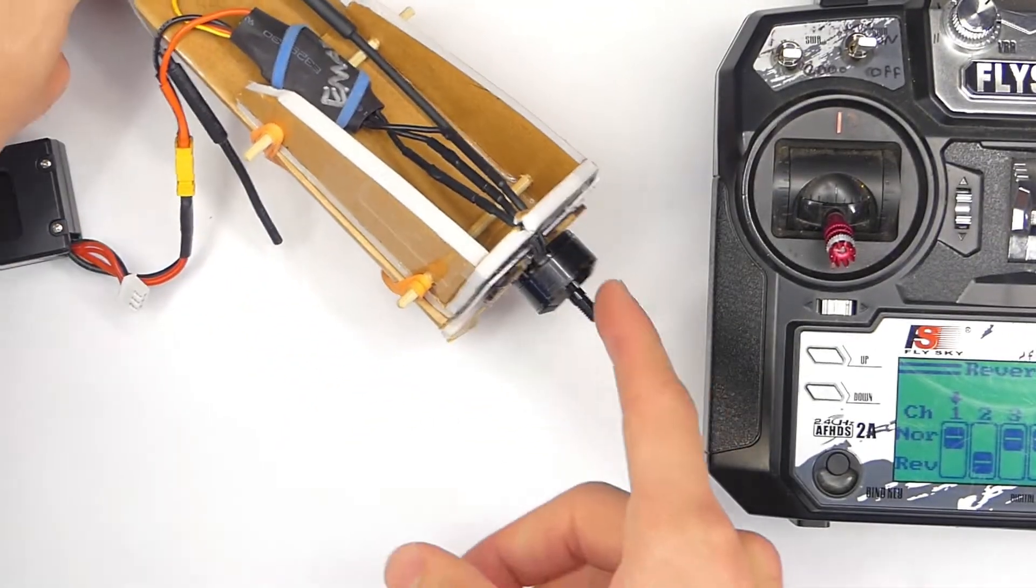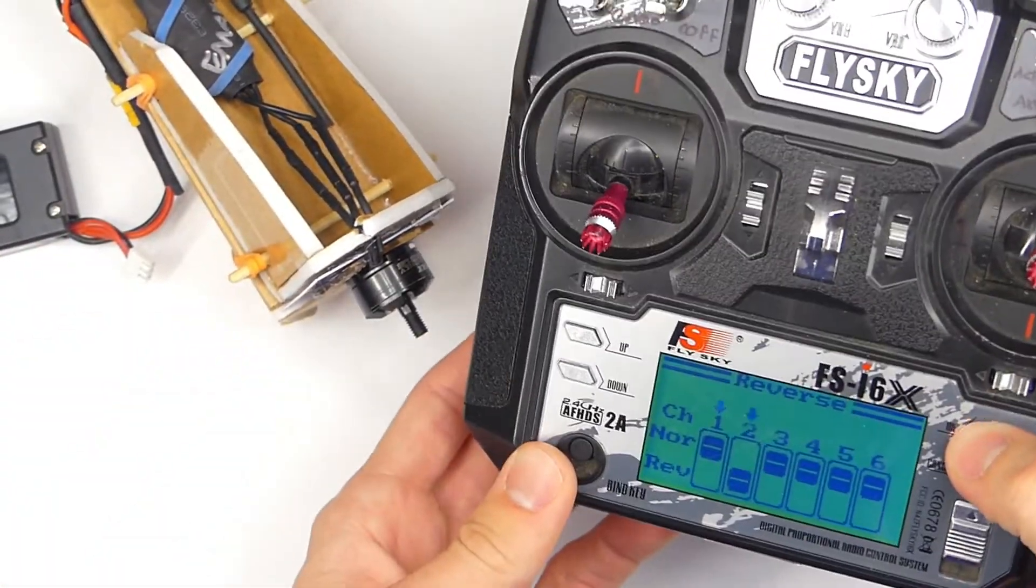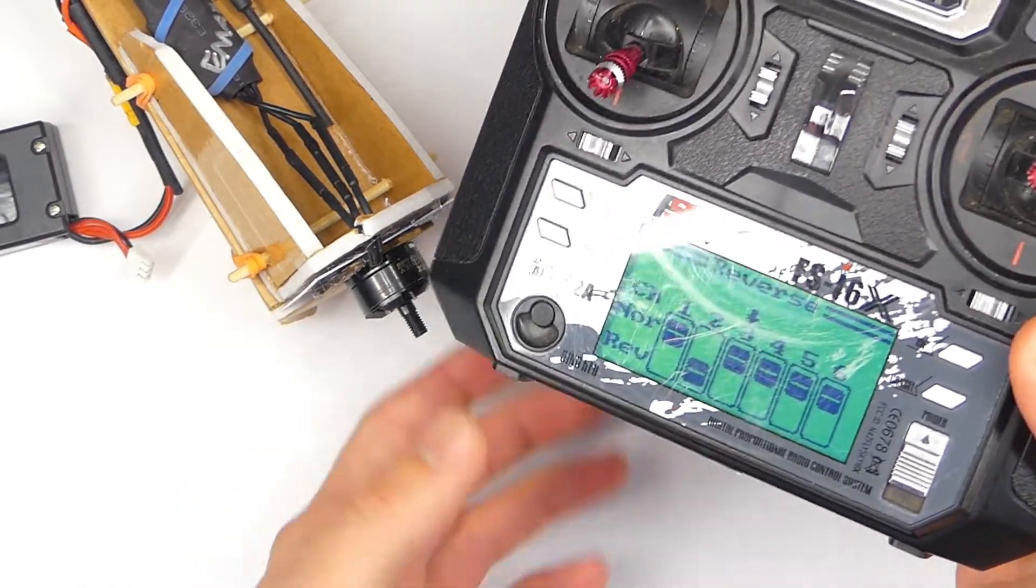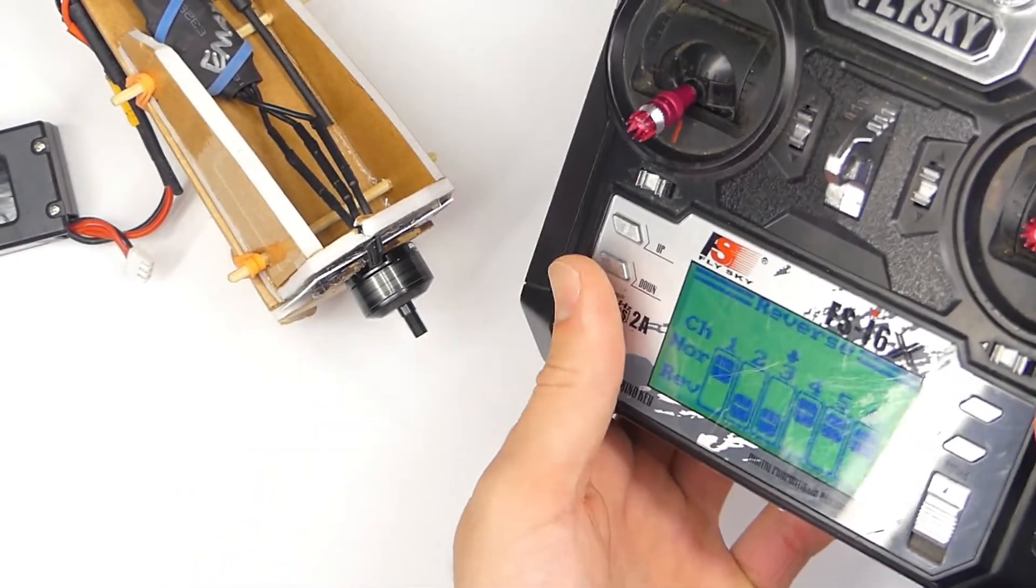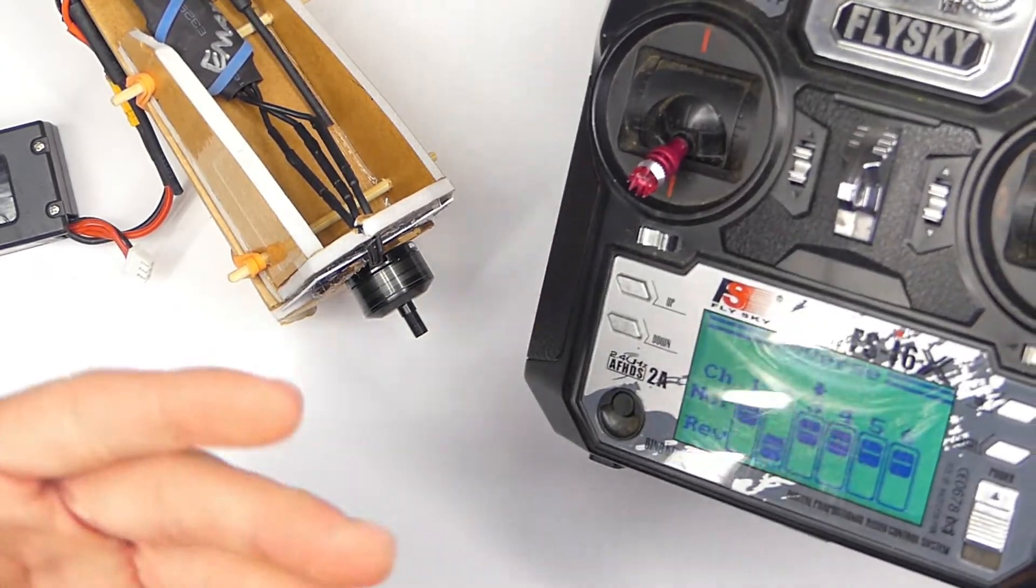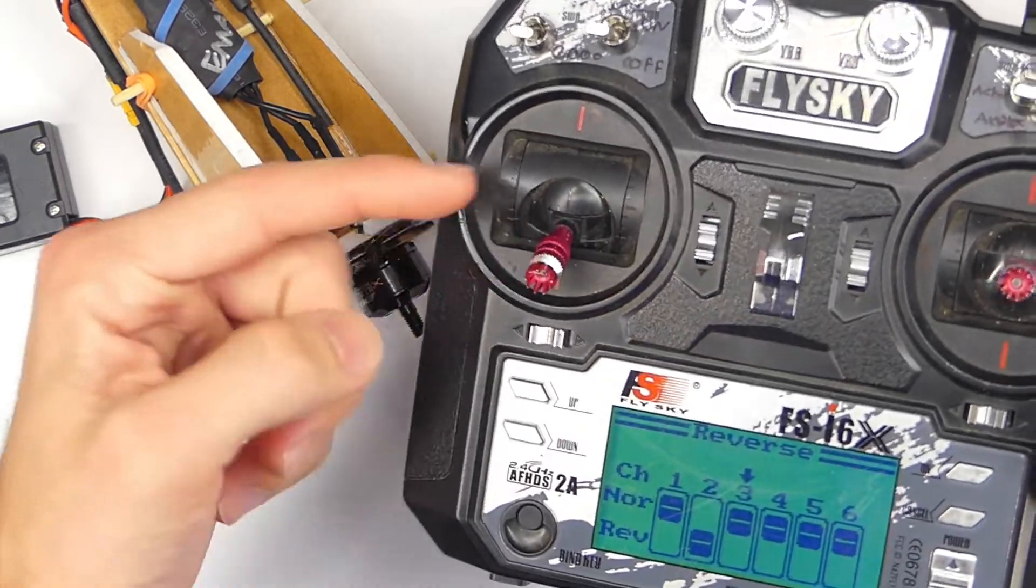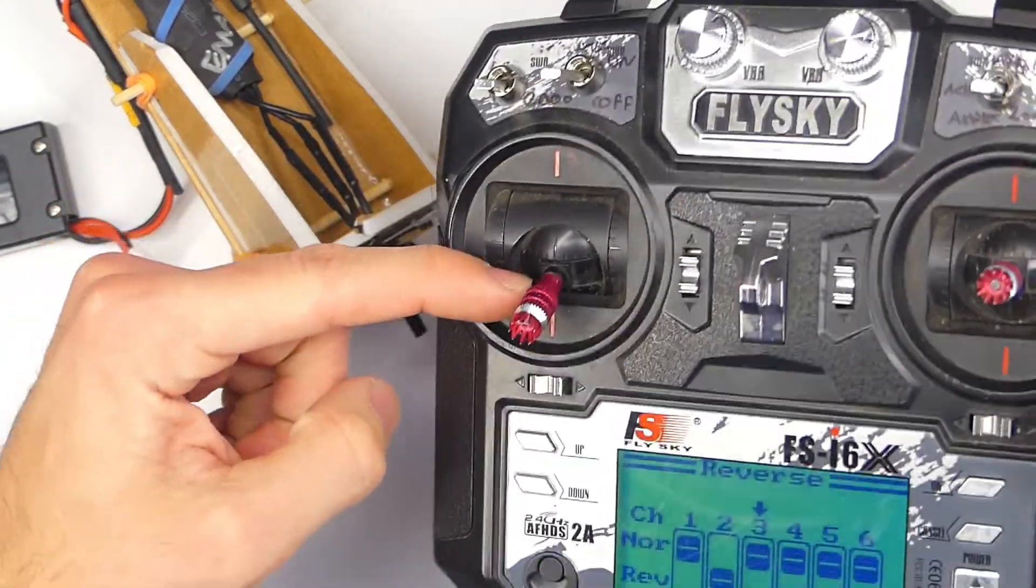You want to take off your propeller whenever you're reversing channels, just in case you accidentally reverse channel 3, which is the standard throttle channel, because if you reverse it, that's going to happen and your motor is going to turn on because your transmitter or your receiver thinks that this throttle down position is full throttle.